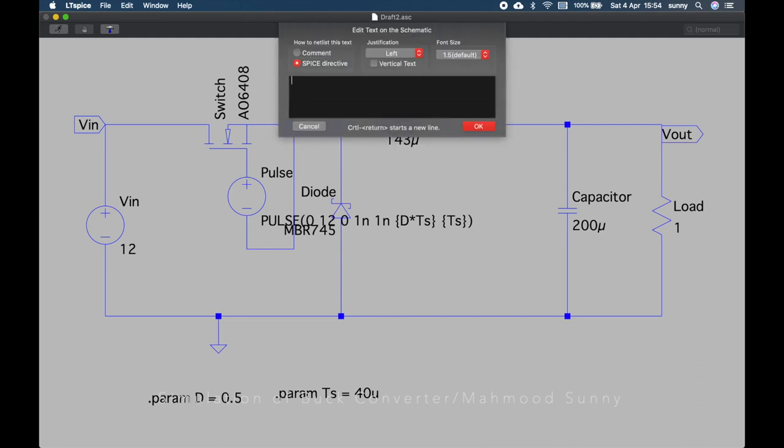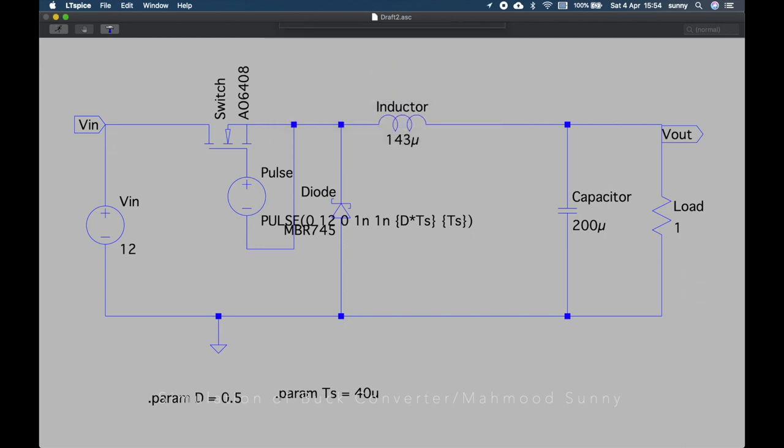Now, let's define the simulation type. We want to do transient analysis, dot tran. Then, for how long it should run, we have to specify. Let's say 5 milliseconds. Our circuit is ready for simulation.